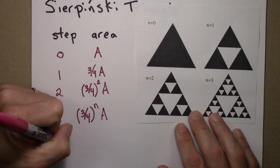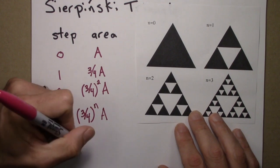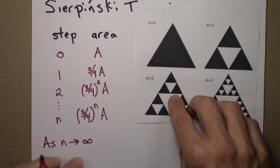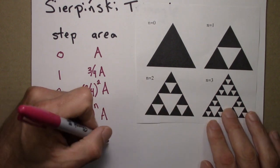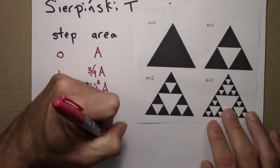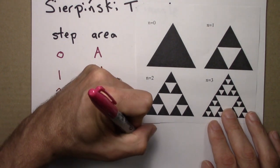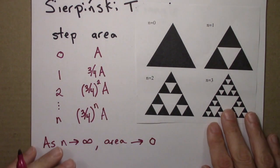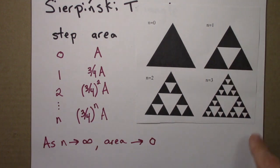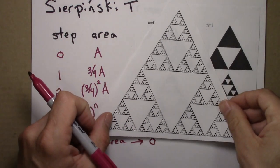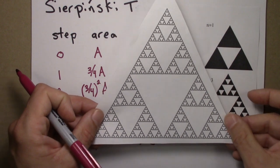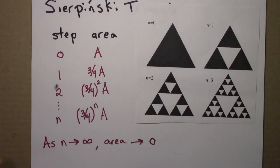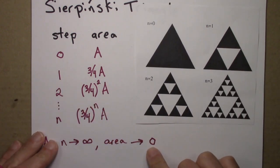As n approaches infinity, as we go farther and farther in this construction, the area gets closer and closer to 0. So we start with the whole triangle, and by the time we repeat this step many, many times, the triangles are getting smaller and smaller, so the total area of this shape is going to 0.